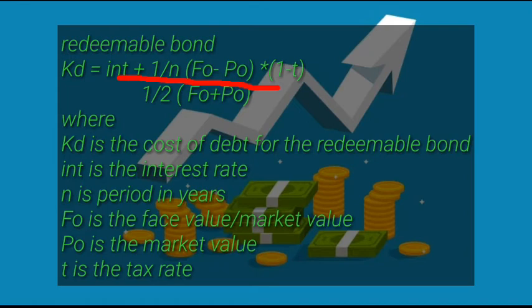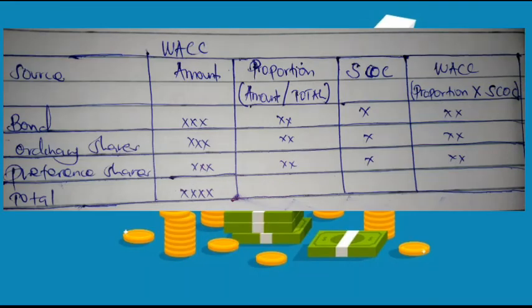When calculating the cost of debt, we always multiply by (1 minus t) — we subtract the tax rate because debt has a tax shield advantage, which is why we always multiply by one minus t.